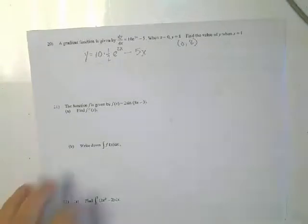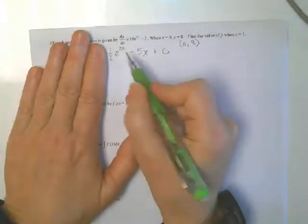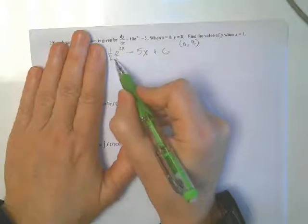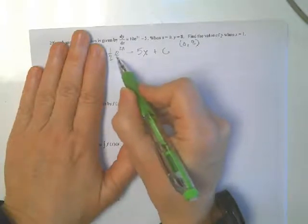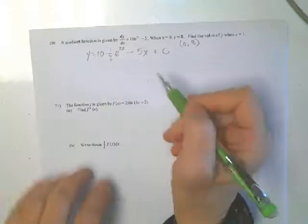And then plus C. Okay, so the reason why I know that this is this is because if I do the derivative, 1 half e to the 2x, e to the 2x times the derivative of 2x, which is 2. 2 times 1 half is 1. Okay, 10 is 10.